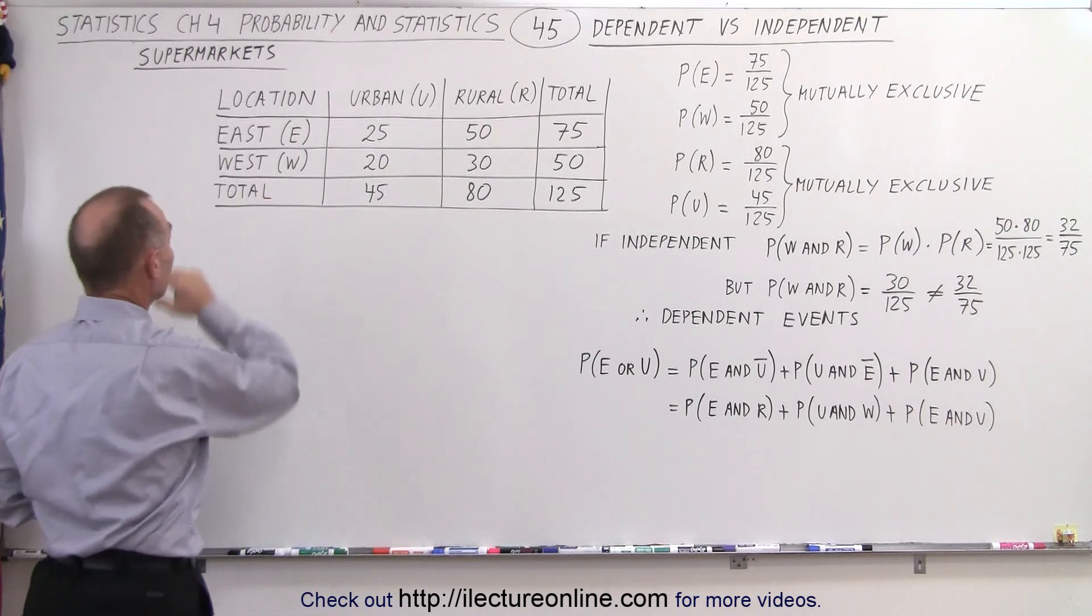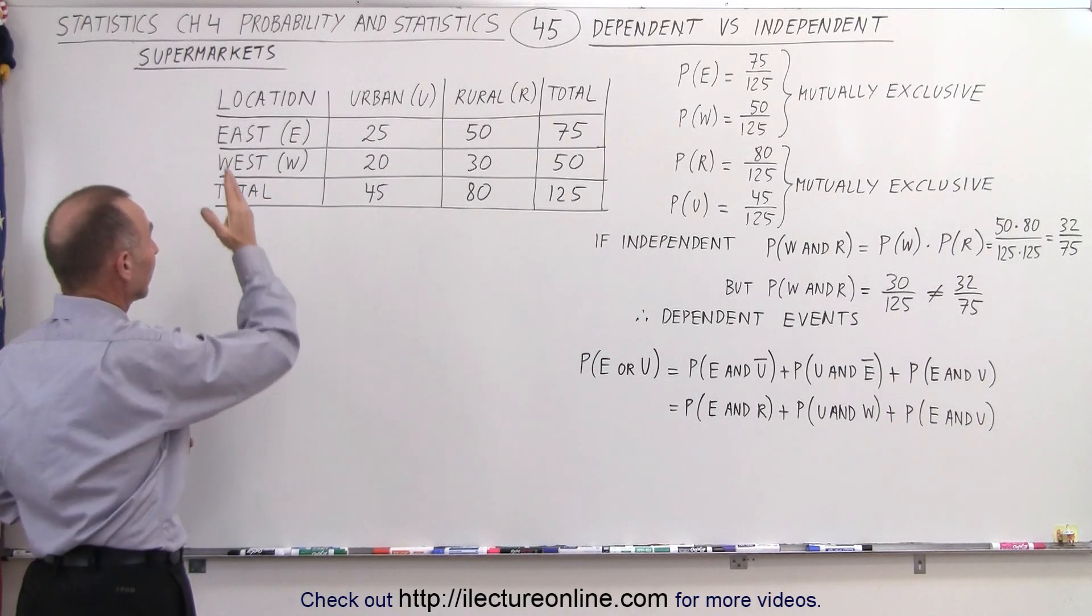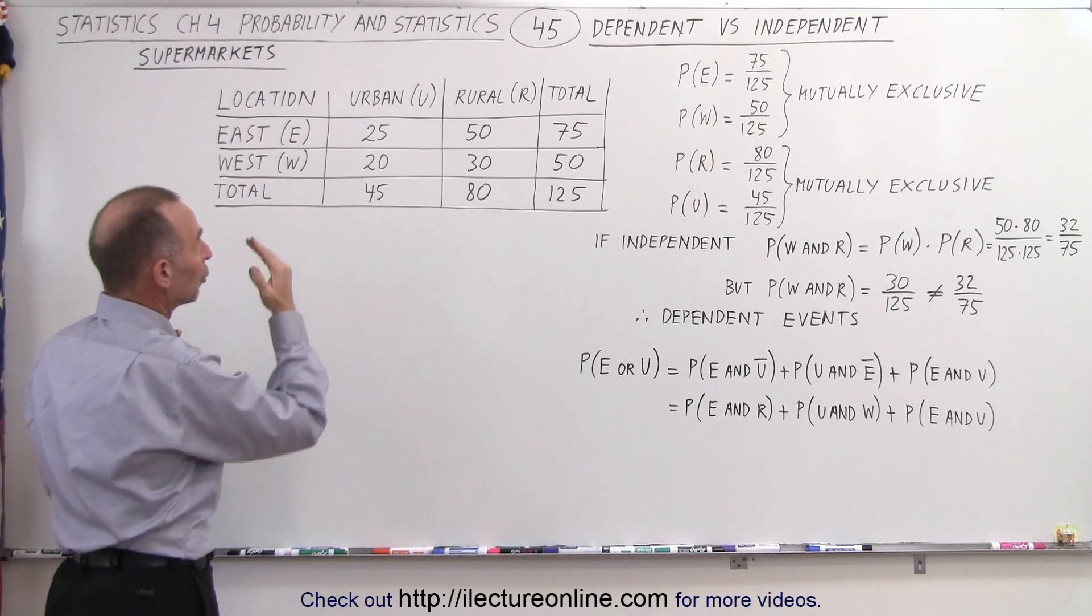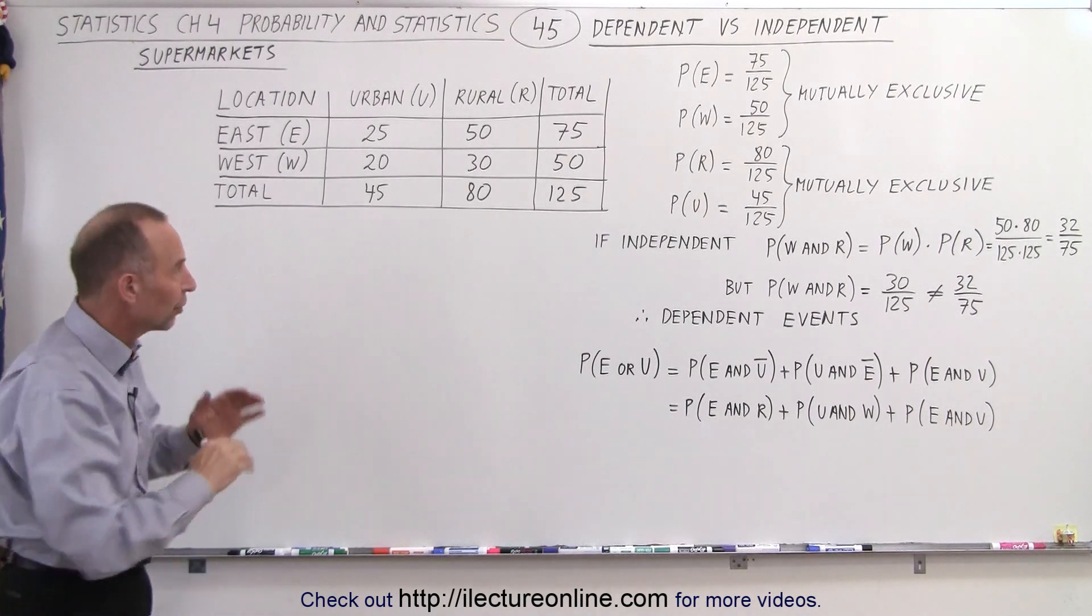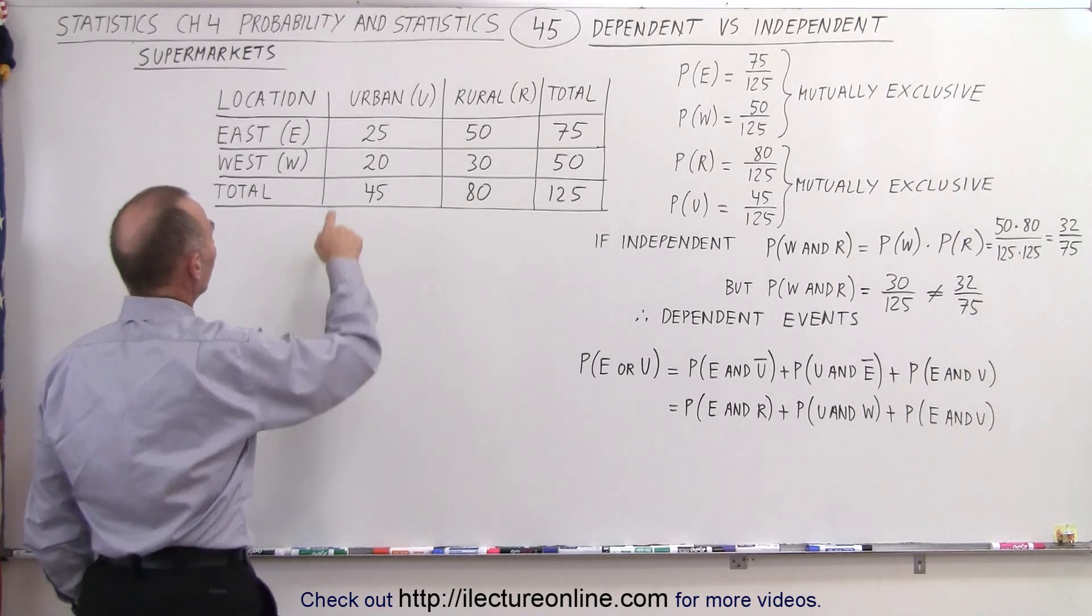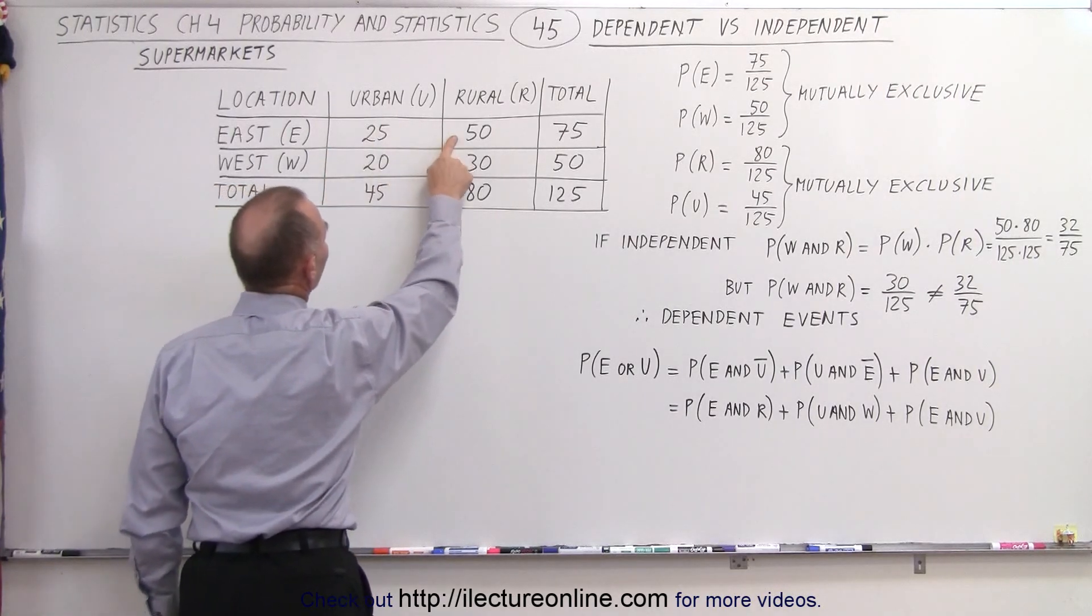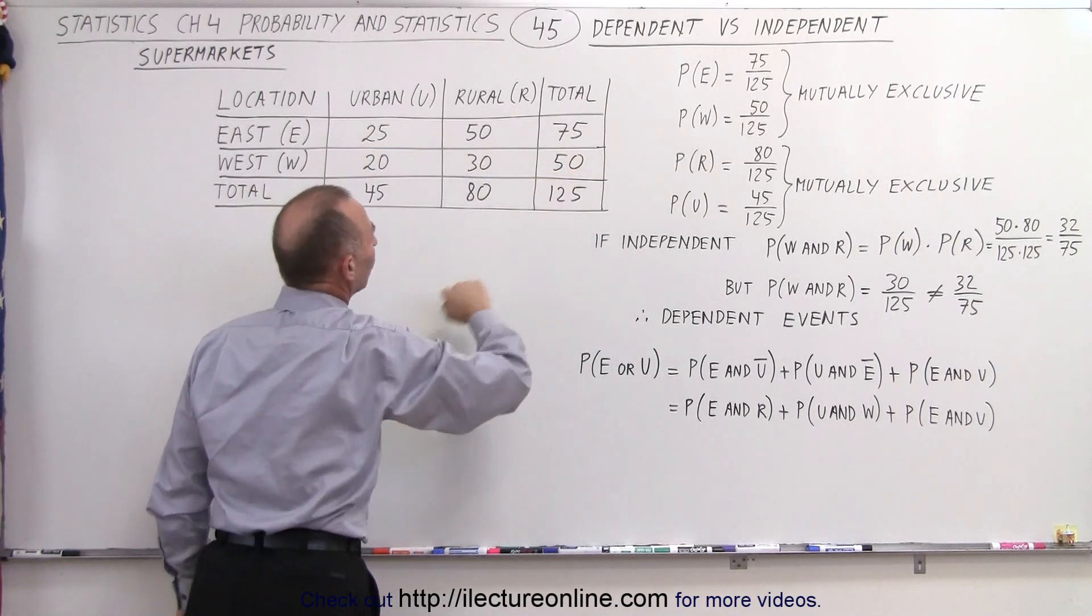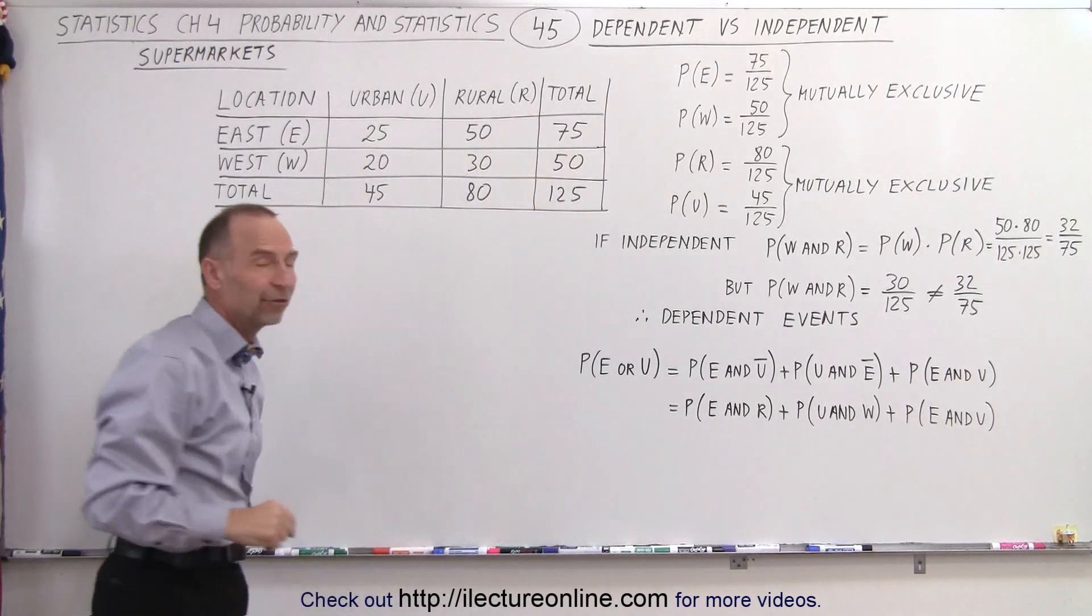Well we're dealing with supermarkets that are located either on the east or the west and they're either in an urban setting or in a rural setting. So you can see here that totally there's 25 plus 50 or 75 supermarkets in the east and there's 50 in the west for a total of 125 supermarkets.